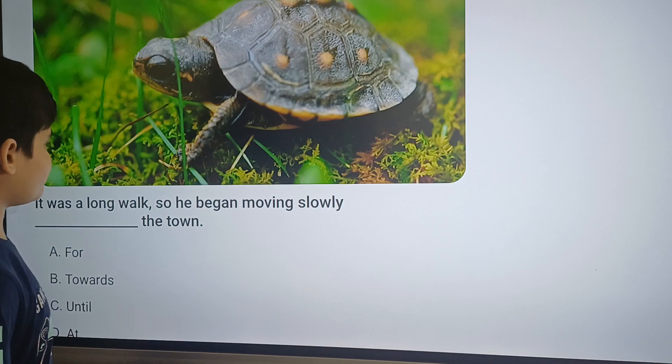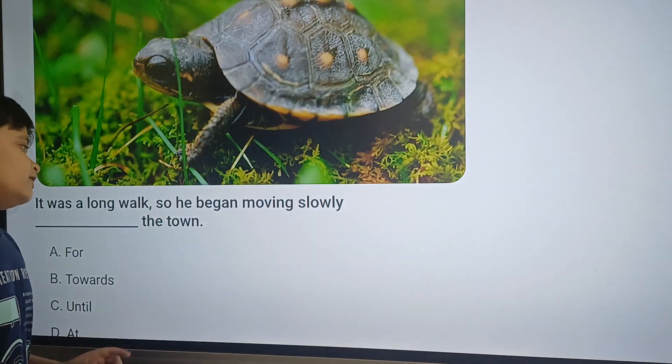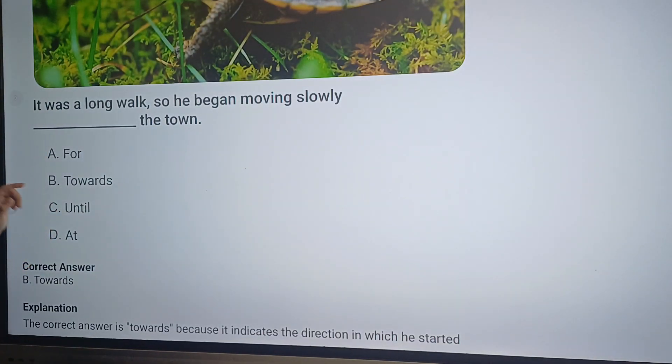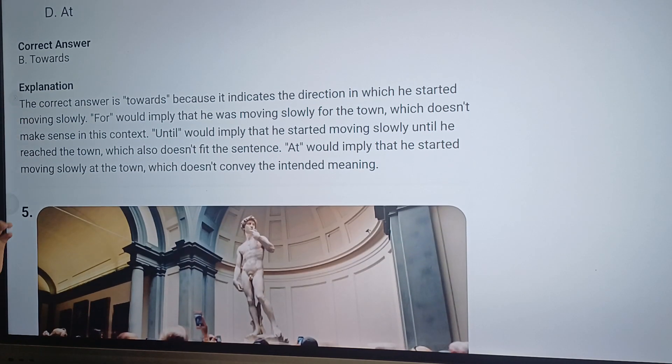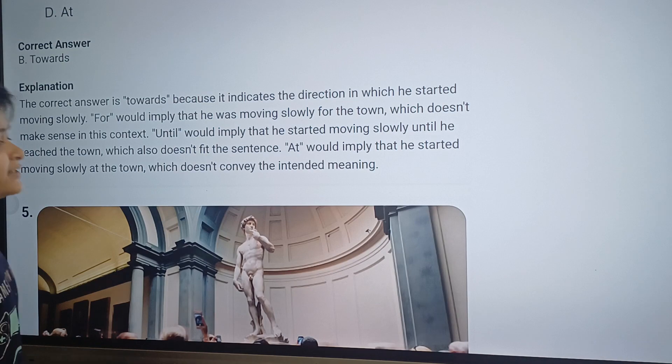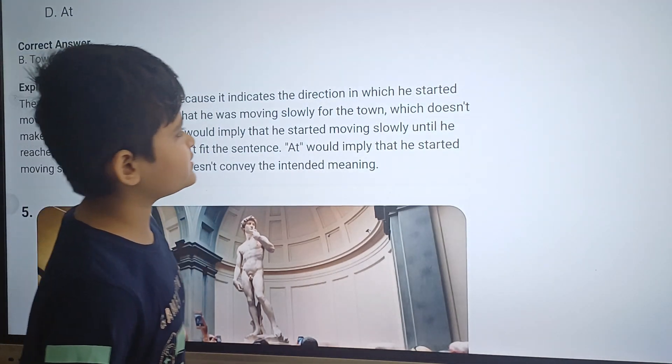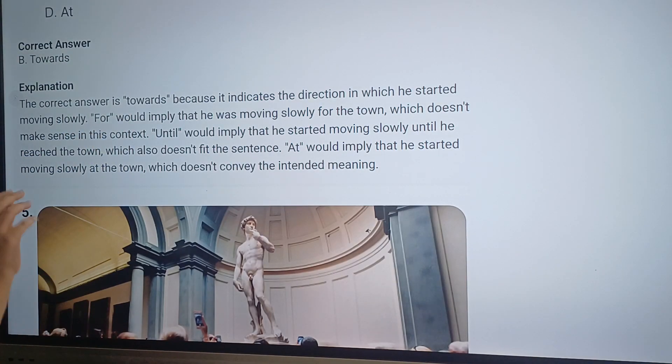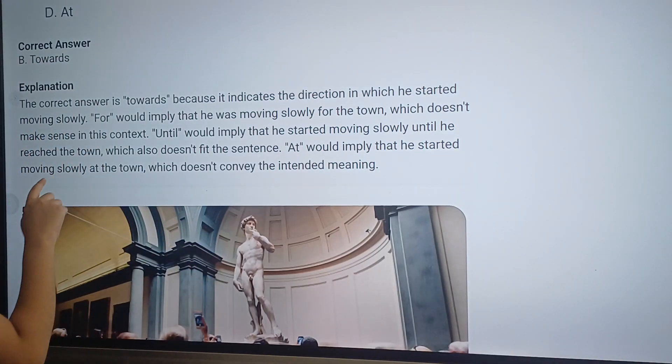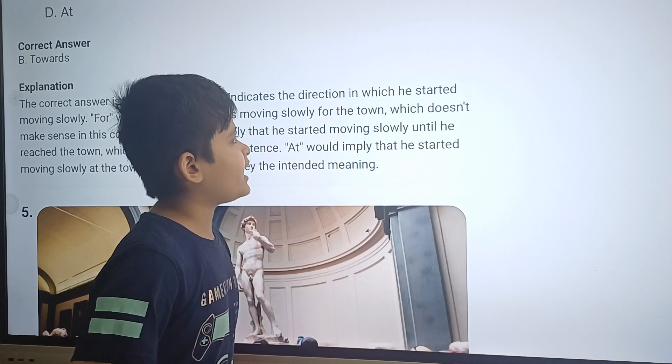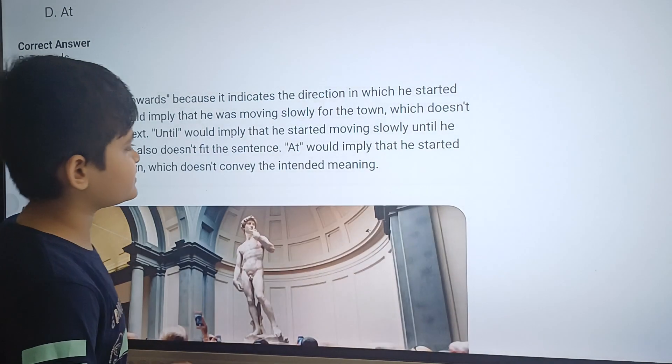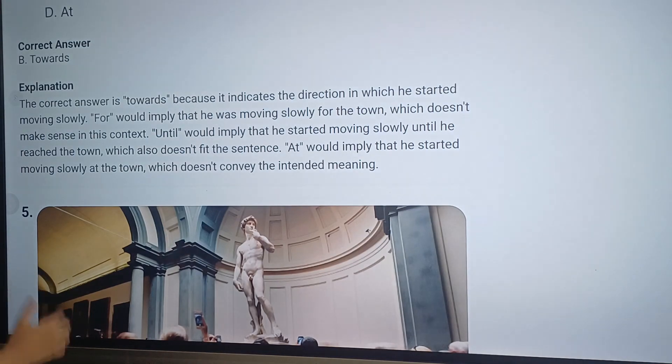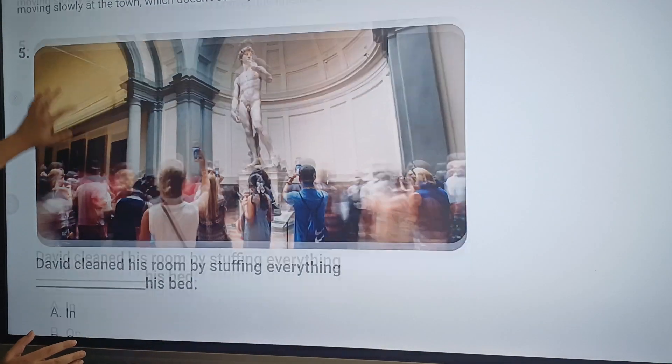The fourth question is: It was a long walk, so he began moving slowly dash the town. The answer for this question will be towards or option B. And as you can see here, correct answer, that it is indeed B or towards. The explanation for this answer is: The correct answer is towards because it indicates the direction in which he started moving slowly. This means that he started moving slowly until he reached the town.